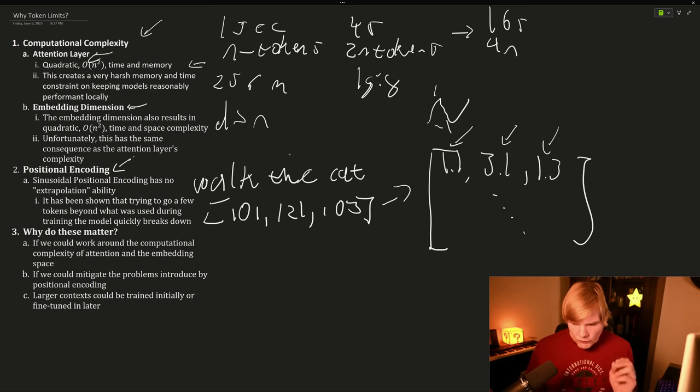And if we could somehow mitigate the problems introduced by positional encoding and generalize token position in a way that the model can understand, then we could have much larger contexts either trained or initially fine tuned later. So now let's move on to a solution to at least positional encoding.